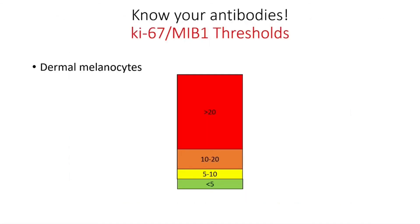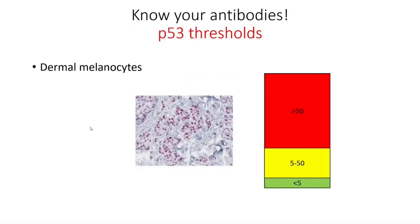Another thing you need to know is the thresholds you're going to use. For proliferation index, which can be assessed by Ki67 or MIB1, the thresholds I use are 5%, 10%, and 20%. Usually above 20% is what you will find in melanomas. For P53, the thresholds I use are less than 5%, between 5 and 50%, and over 50% in the dermal melanocytes. This type of strong positivity will be suggestive of melanoma.